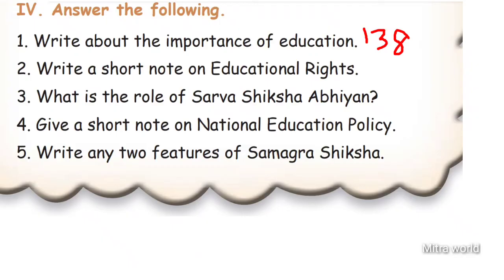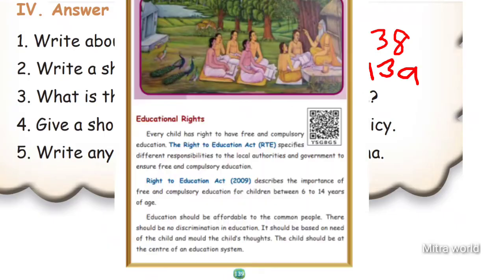Next, write a short note on educational rights. Take page number 139. Every child has the right to have free and compulsory education. The Right to Education Act specifies different responsibilities to local authorities and government to ensure free and compulsory education. Right to Education Act 2009 covers children between 6 to 14 years of age.